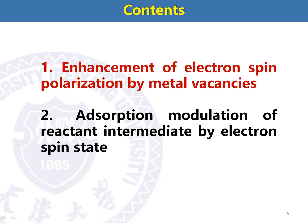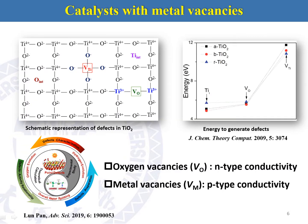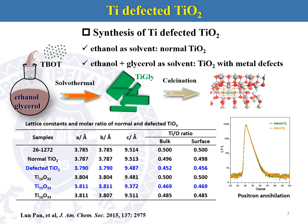Today my topic contains two parts. The first is enhancement of electron spin polarization by metal vacancies. For metal oxides, there are several defects: metal vacancies, oxygen vacancies, interstitial titanium, and interstitial oxygen. For the typical N-type semiconductor titanium dioxide, the introduction of oxygen vacancies is much easier than titanium defects, so oxygen vacancies are mostly studied for TiO2.